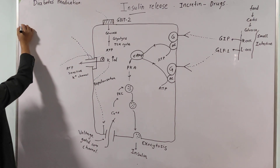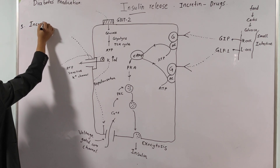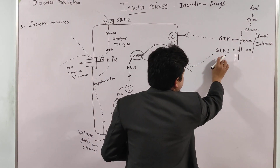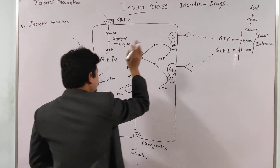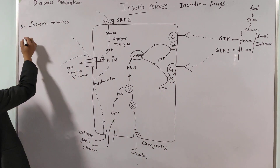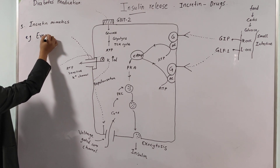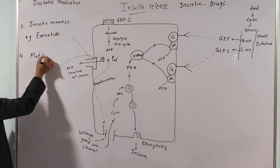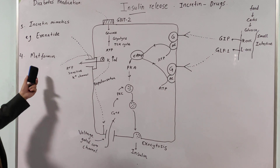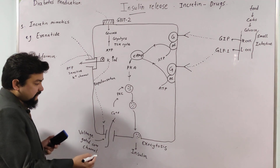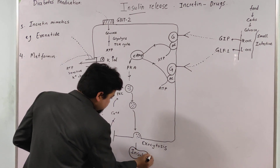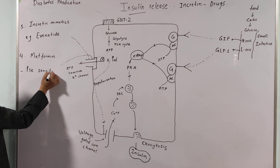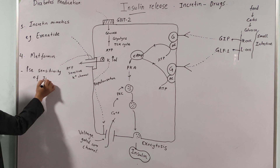Another group of drugs are incretin mimetics — these drugs copy the action of incretins, work like incretins, and ultimately help release insulin from beta cells. An example is exenatide.